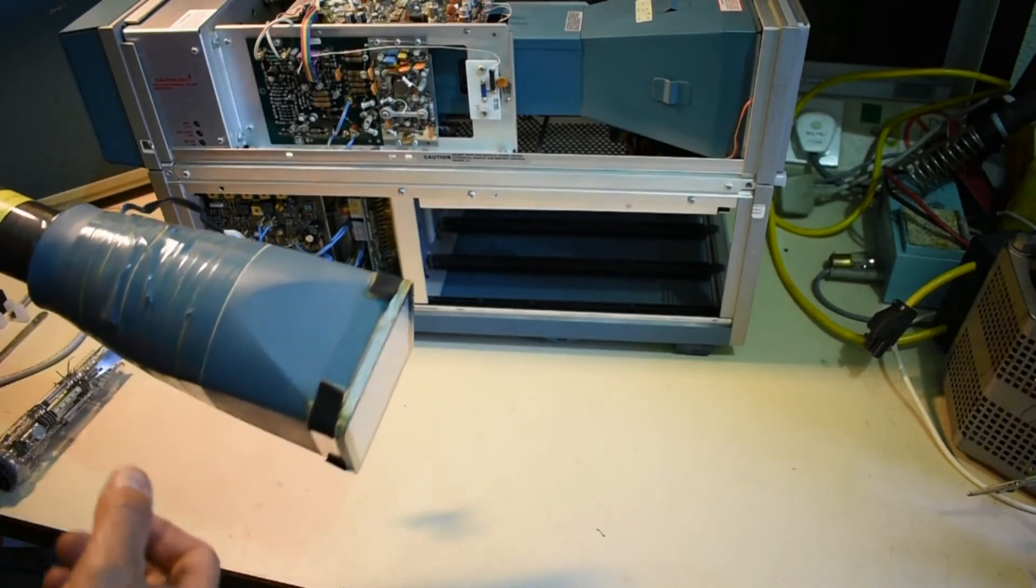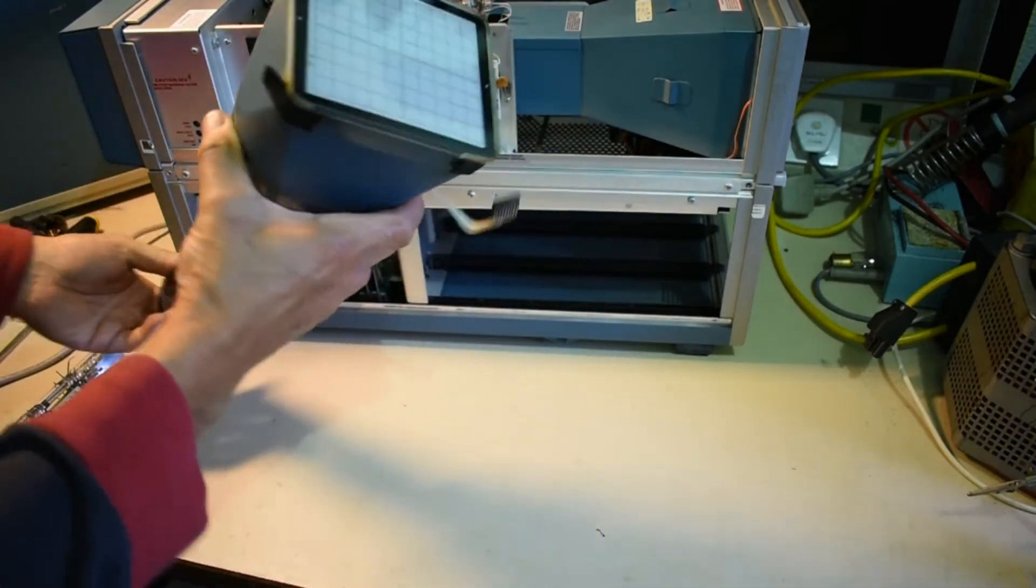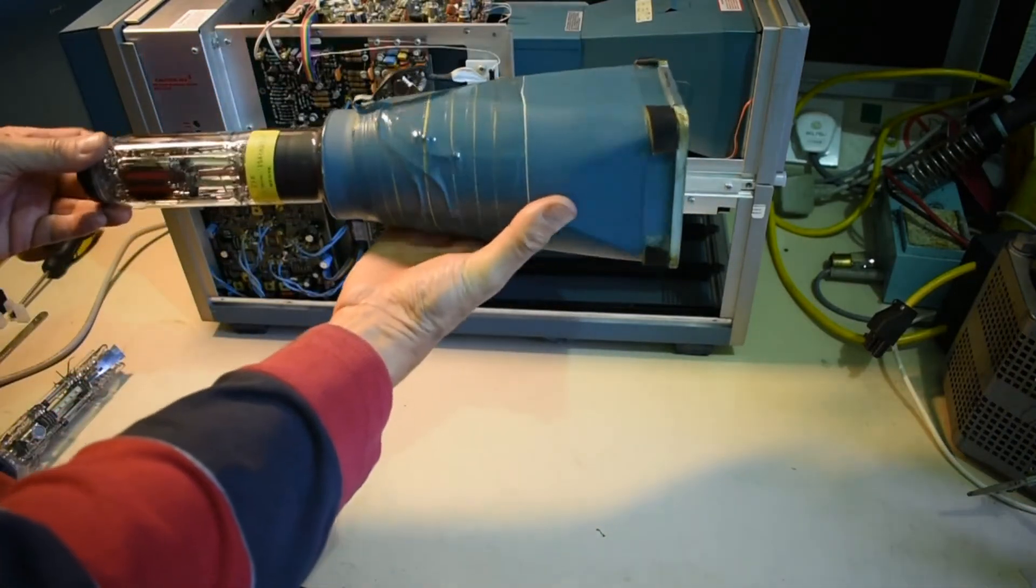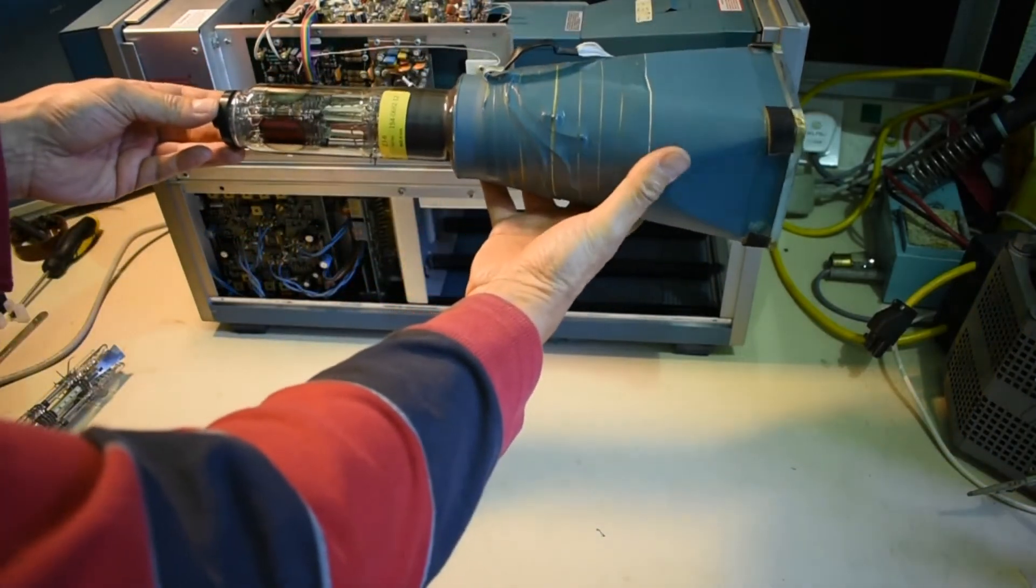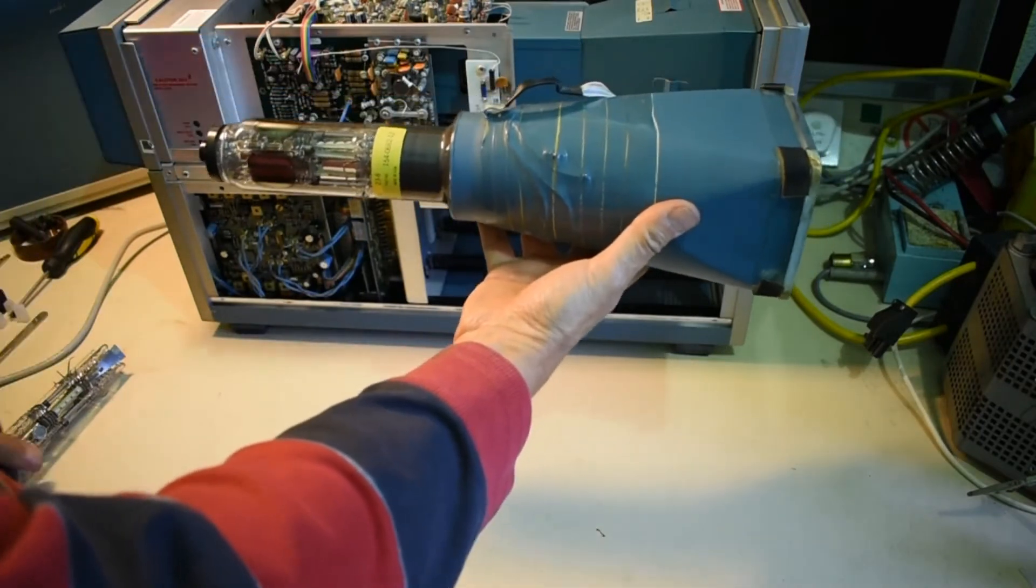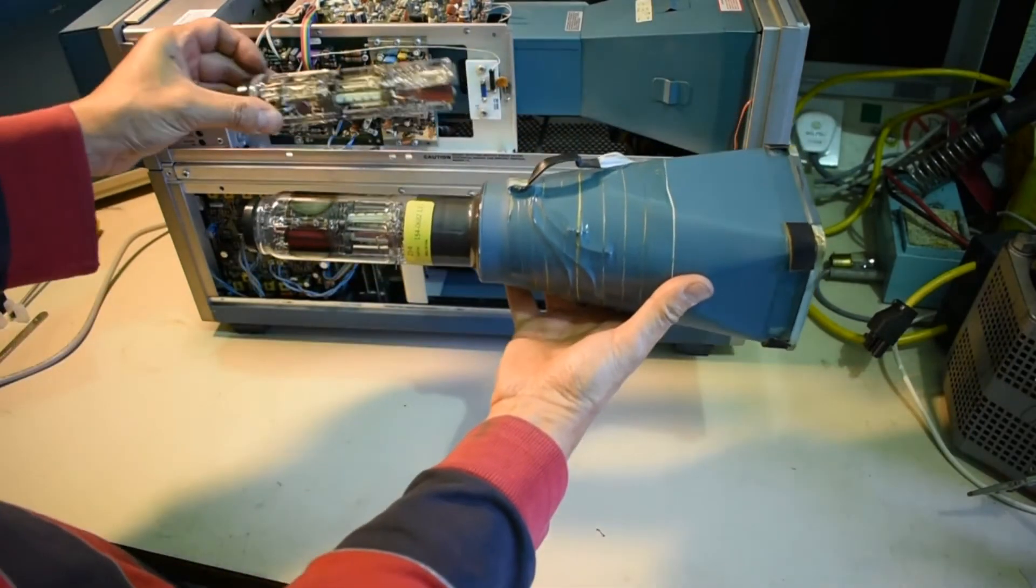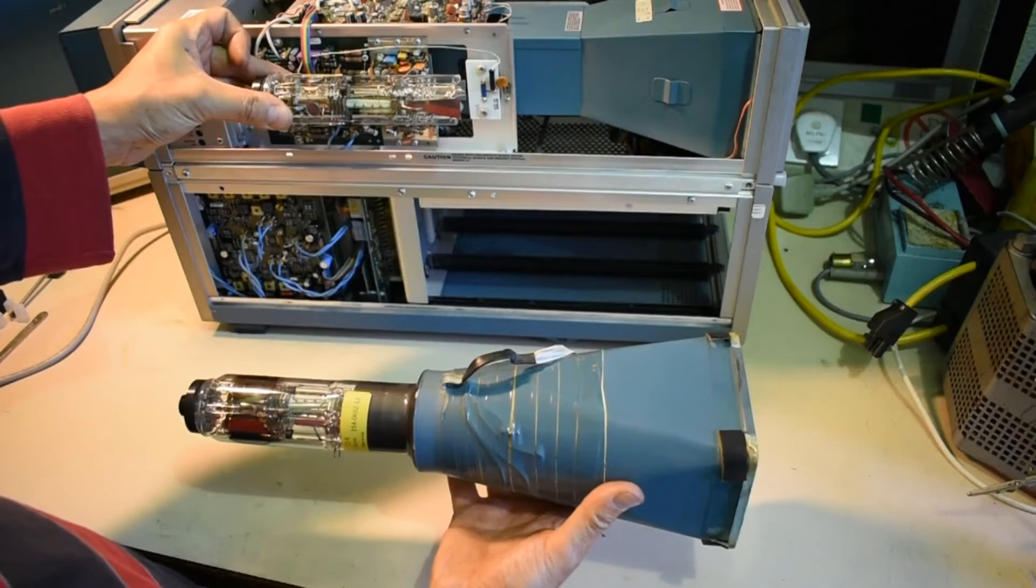Before digital scopes were available, the storage scopes that is, this was an analog storage scope. A similar-sized CRT with an electron gun assembly which is very similar to the one in this digital scope.